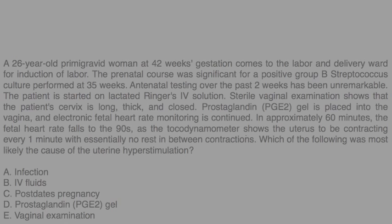A 26-year-old primigravid woman at 42 weeks gestation comes to the labor and delivery ward for induction of labor. The prenatal course was significant for a positive Group B strep culture at 35 weeks. Antenatal testing over the past two weeks has been unremarkable. The patient is started on lactated Ringer's IV solution. Sterile vaginal exam shows the cervix is long, thick, and closed. Prostaglandin gel is placed into the vagina and an electronic fetal heart rate monitor is applied. In approximately 60 minutes, the fetal heart rate falls to the 90s, and the tocodynamometer shows the uterus contracting every one minute with essentially no rest in between. Which of the following was the most likely cause of the uterine hyperstimulation?